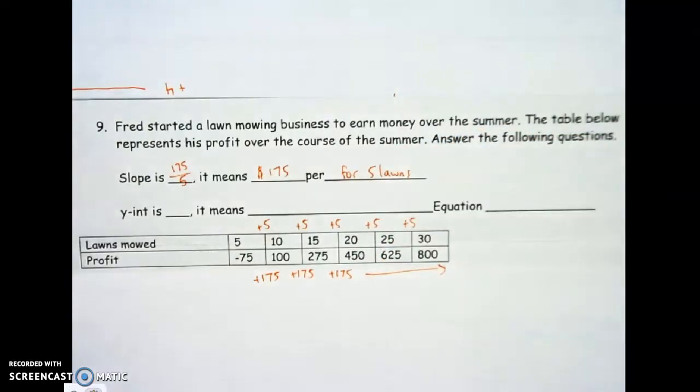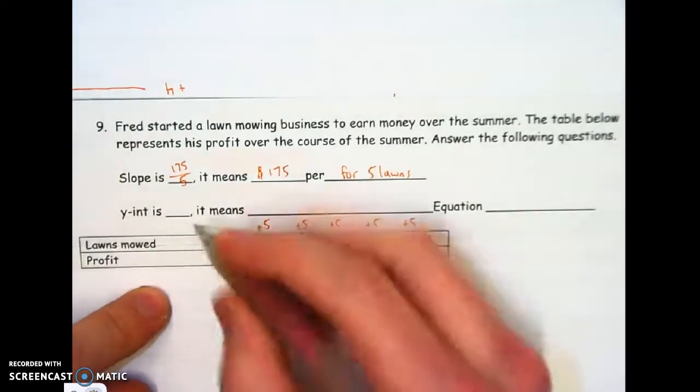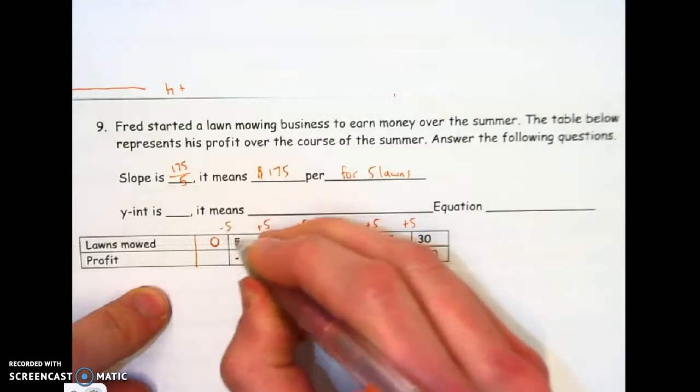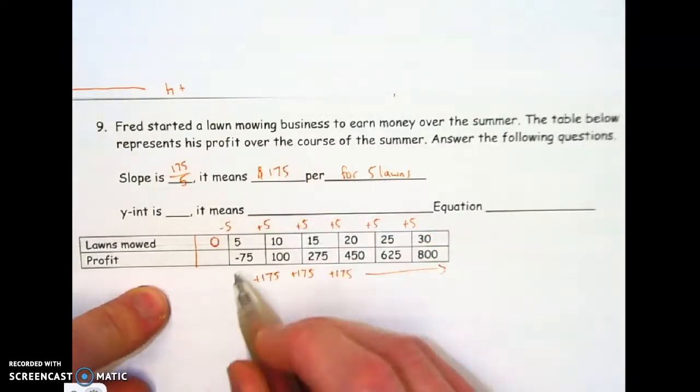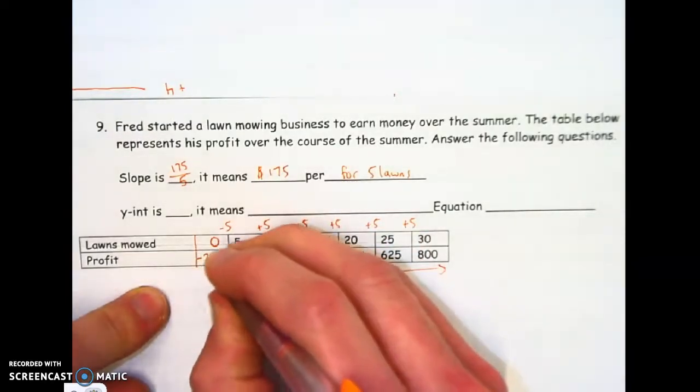Okay, next thing here. The y-intercept. I need to go back and find zero in the table. So I'm going to go back five to zero. I need to subtract another 175. That puts us at minus 250.